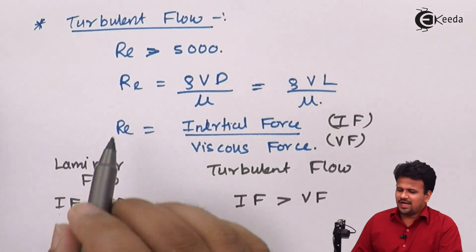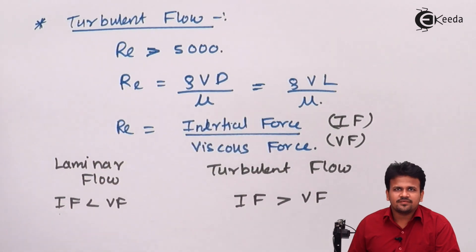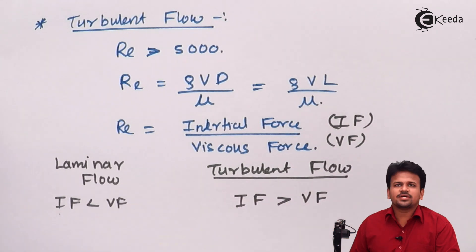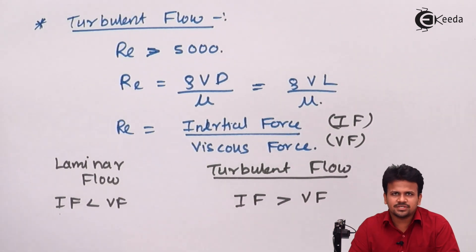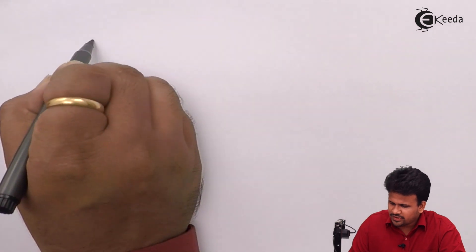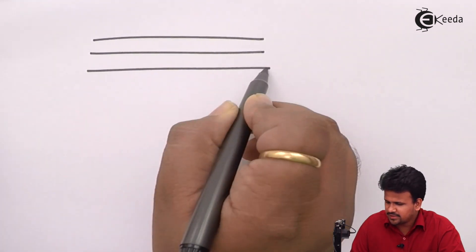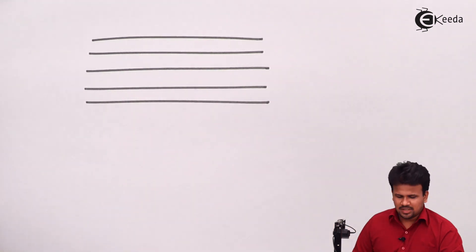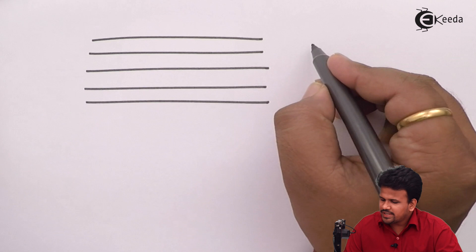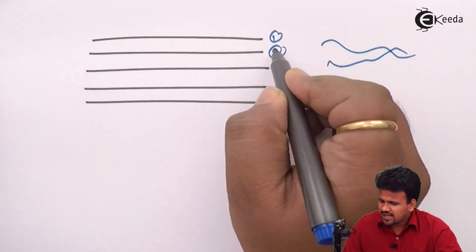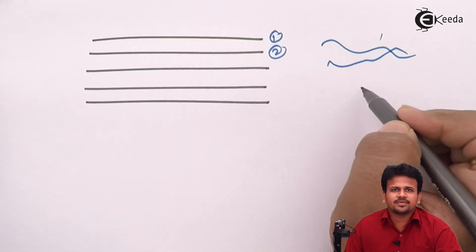For that, we should have a Reynolds number greater than 5000. While the fluid is turbulent, there is intermixing of the adjacent layers of the fluid. In laminar flow, one layer follows another with no intermixing. But in turbulent flow, the orientation is random — there is formation of waves where the first and second layers intermix each other.